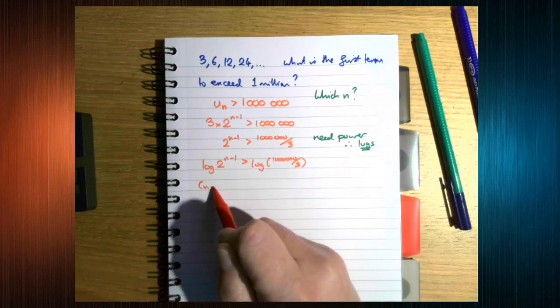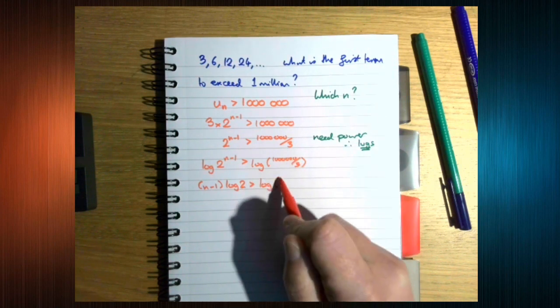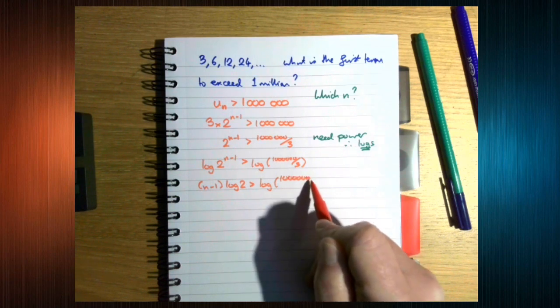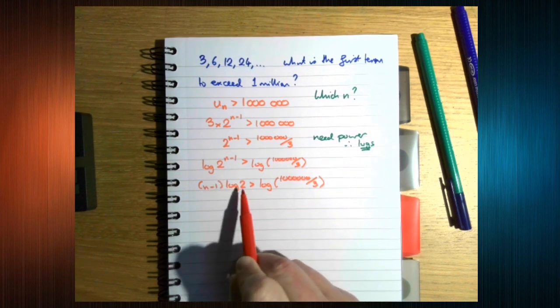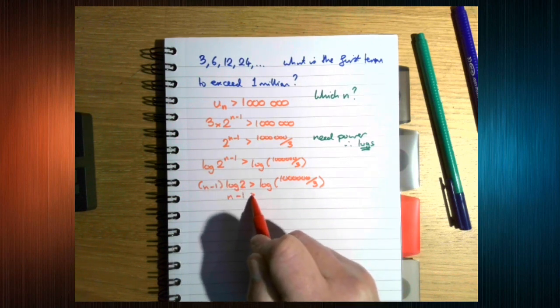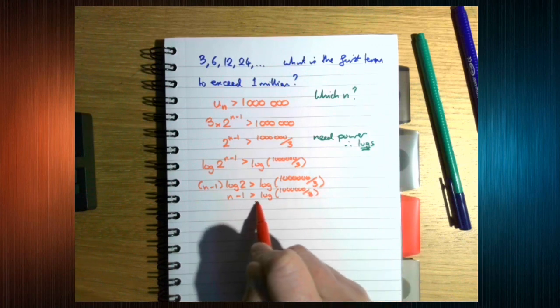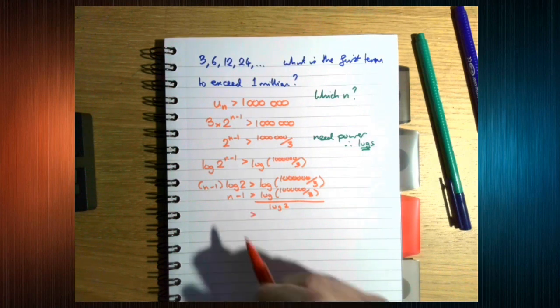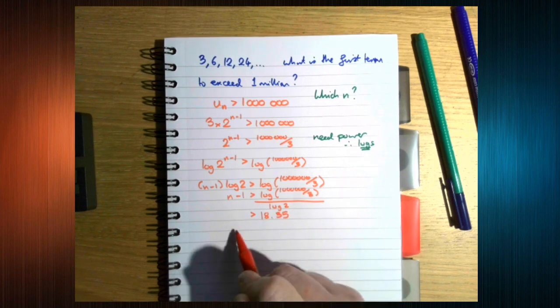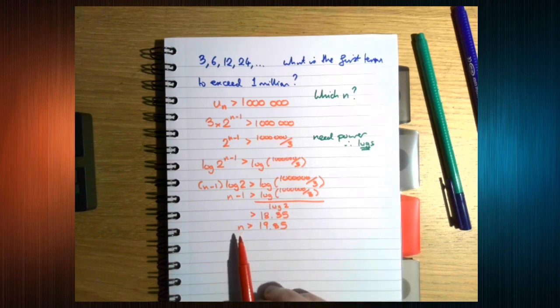Okay, so we get n minus 1 log 2 greater than log of this mass. Log 2, because this is greater than 1, this is definitely a positive number. So, we know n minus 1 has got to be greater than 18.35, which means n has got to be greater than 19.35. n has got to be an integer.